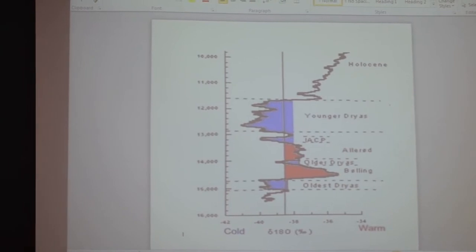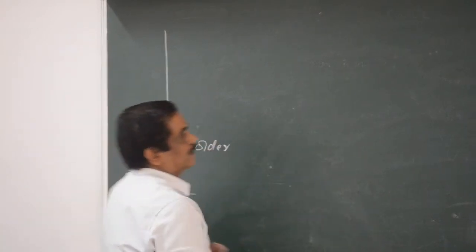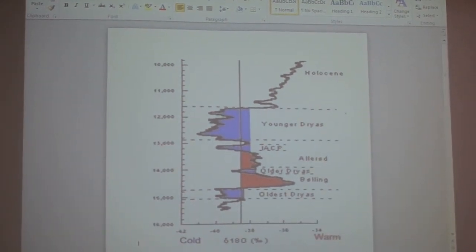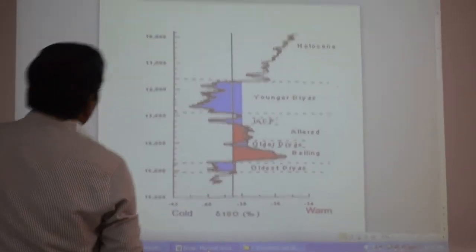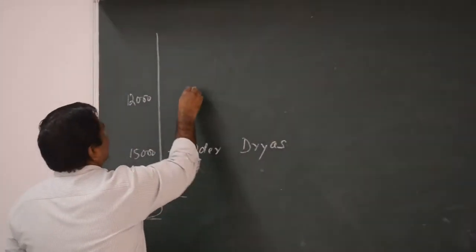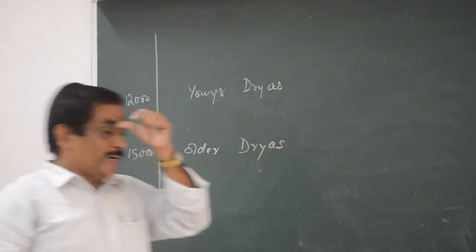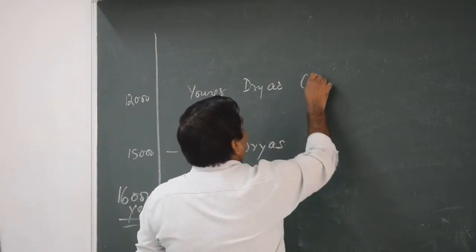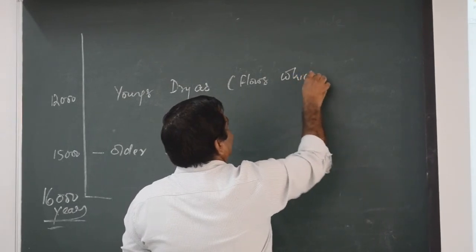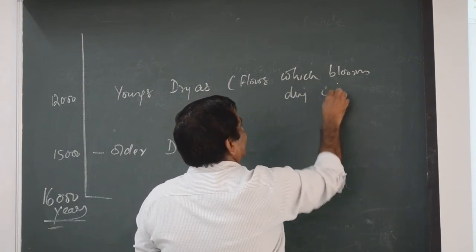Around 15,000 years ago, we have the Older Dryas. Then around 12,000 years ago, the Younger Dryas — which is more prominent. These are cold periods named after Dryas, a flower with soft petals that blooms during cold climate conditions.